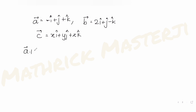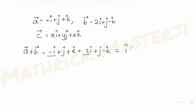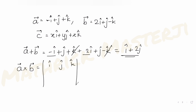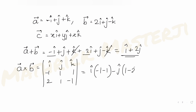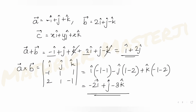Vector a plus vector b: adding minus i+j+k and 2i+j-k gives i plus 2j (the k terms cancel). For a cross b, setting up the determinant with coefficients of a (−1, 1, 1) and b (2, 1, −1), we get i(−1−1) minus j(1−2) plus k(−1−2), which is minus 2i plus j minus 3k.